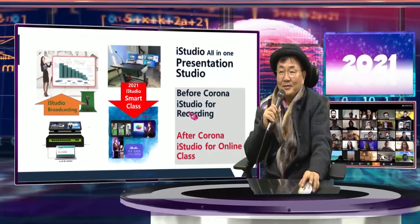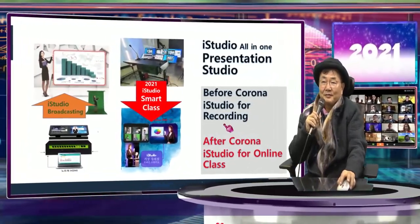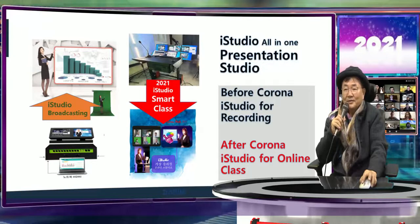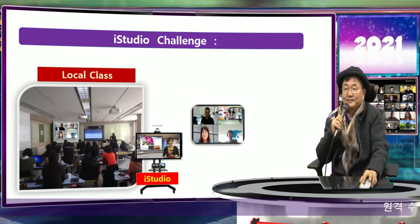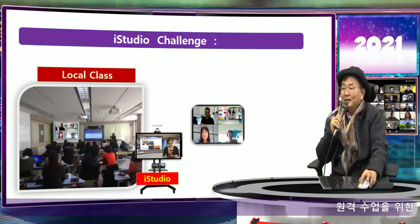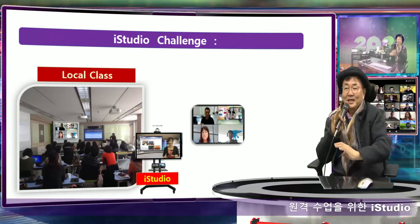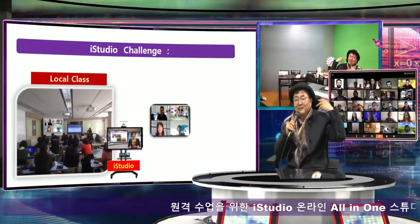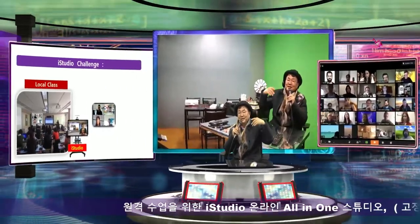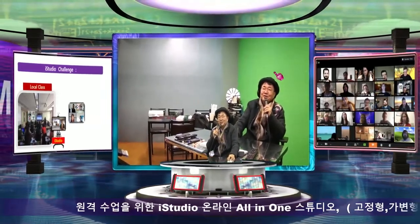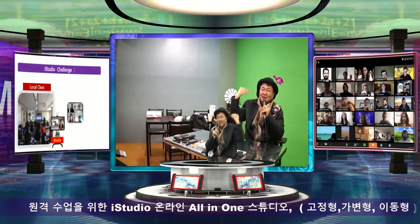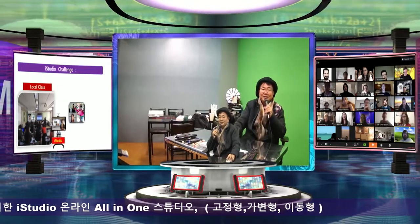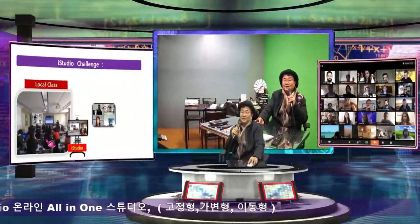Before Corona, iStudio was designed for recording in a studio. Now after Corona, we use it as an online classroom to make interactive lectures. As you see, I'm just sitting in my room without any special setup — this just looks like an office. The only difference is my background wall is painted green, so I just remove everything except myself, and this way we make a classroom for a live lecture.